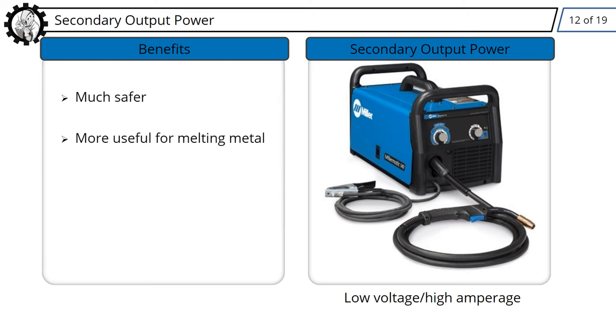Most welding is done with direct current. This means the electrons flow in one direction through the welding circuit. There are two possible combinations for DC current. DC electrode positive, which is also called reverse polarity, and DC electrode negative, which is also called straight polarity.